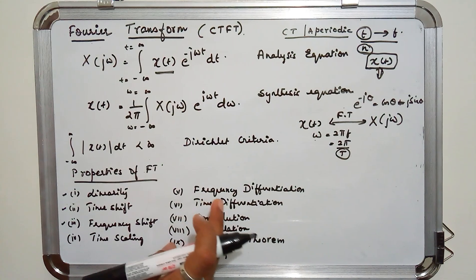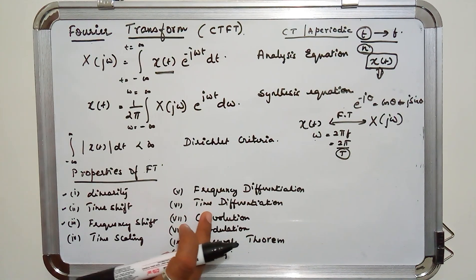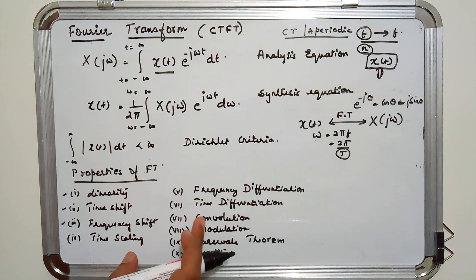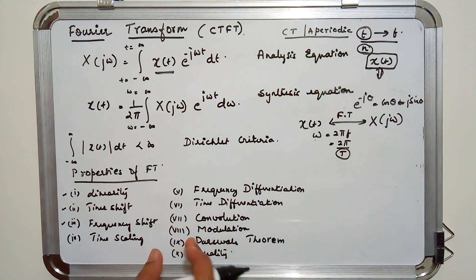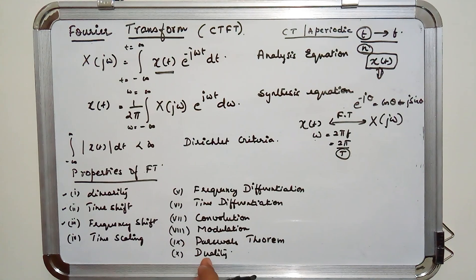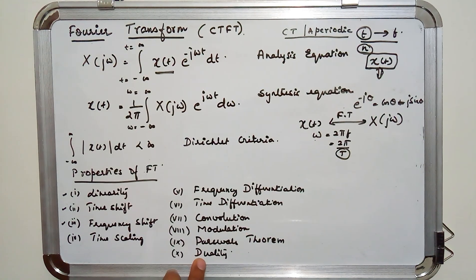Frequency differentiation describes what you get when you differentiate the Fourier transform, and time differentiation describes the effect of differentiating x(T). Convolution: as noted when discussing the advantages of frequency domain analysis, convolution in the time domain becomes multiplication in the frequency domain. Modulation is the reverse — multiplication in the time domain becomes convolution in the frequency domain. Parseval's theorem gives the relationship between the energy of the signal and its power spectral density. Finally, there is one more property restricted to continuous time Fourier transform — called duality — which is very handy in solving problems.